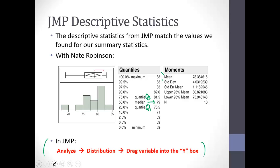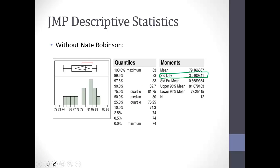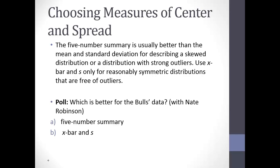If you have your chapter three notes, go ahead and flip over to those. One more thing I wanted to add — when we're choosing a measure of center and spread: the standard deviation goes with the mean; the median and the interquartile range go together. The five-number summary is usually better than the standard deviation and mean when we have a skewed distribution or something with outliers. We want to use the mean and standard deviation when we have a symmetric distribution without lots of extreme outliers.